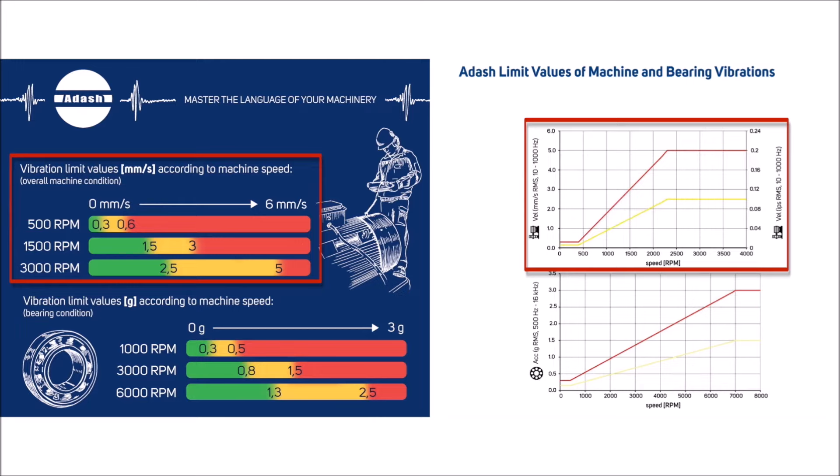You can download this ADASH vibration limit chart through the link below this video. Do not assume that a newly installed machine runs under its optimal condition. What if it was badly installed? It could be misaligned or unbalanced right from the beginning, as we described in Vibration Diagnostics for Beginners Part 1.